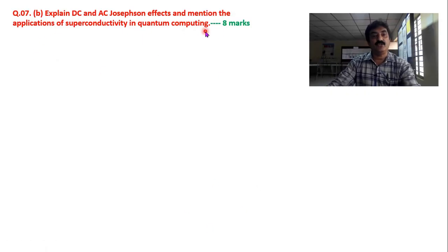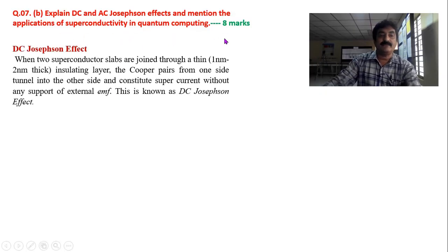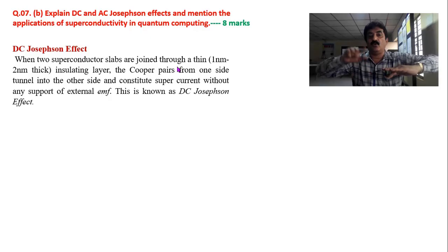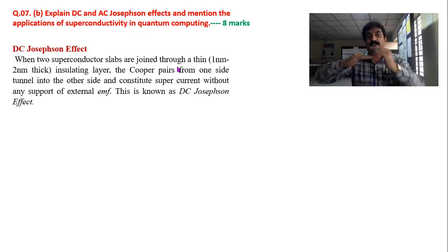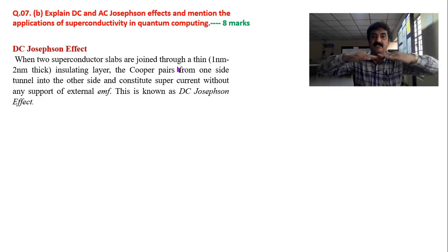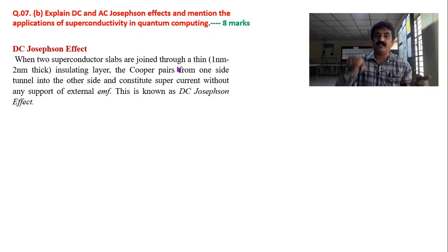Next question: explain DC and AC Josephson effect and mention the applications in superconductors in quantum computation. There are two types of Josephson effect: DC and AC. When two superconducting slabs are joined by a thin insulating layer of about 1 to 2 nanometers, Cooper pairs will tunnel from one side to the other, constituting a current — a supercurrent — without any power supply. This is known as the DC Josephson effect.